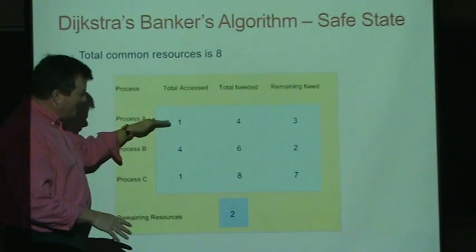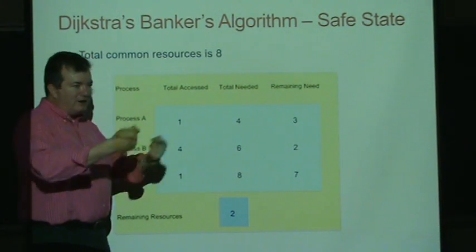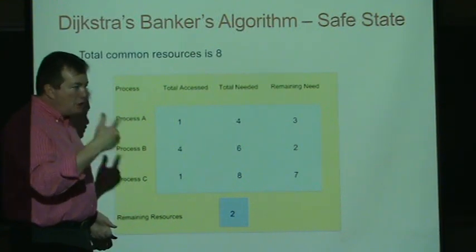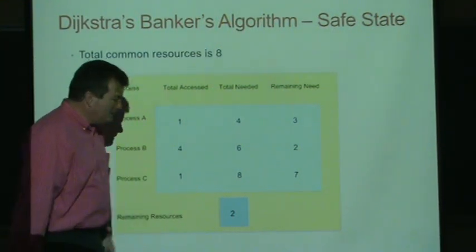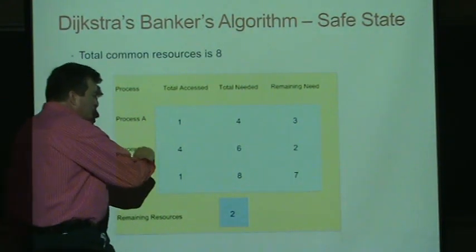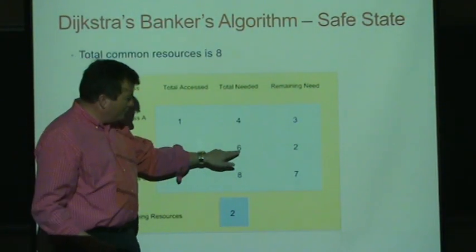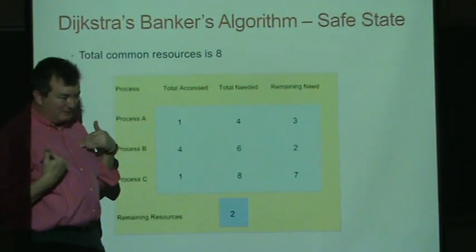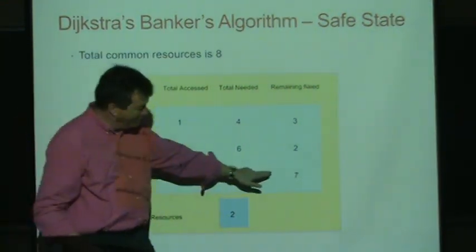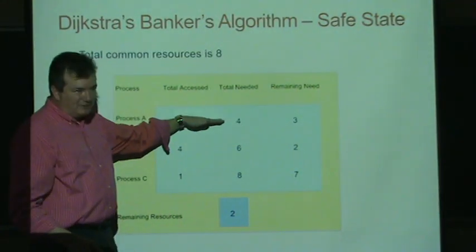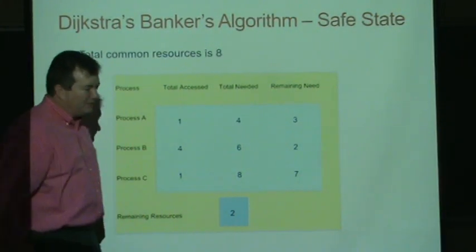At this point, if A or C do a P operation asking for a resource, we say no and make them wait — even though we have resources available. We ensure B finishes first. When B finishes, it returns all six resources. Now we have six, which lets us guarantee A can finish, and then once A finishes, we can guarantee C can finish. This is the sequential safe order: B, then A, then C.